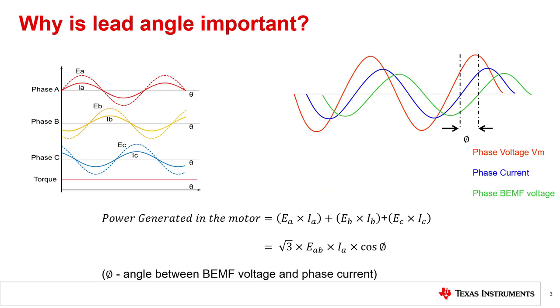In this slide we are going to see why lead angle is an important parameter in BLDC motors. The instantaneous power generated in a BLDC motor is the sum of the product of back EMF and current in each phase of the motor. The average power generated depends on phi, which is the angular phase difference between the phase back EMF voltage and phase current.